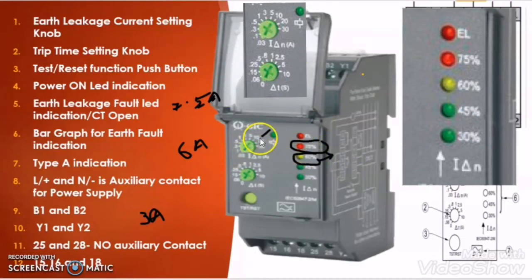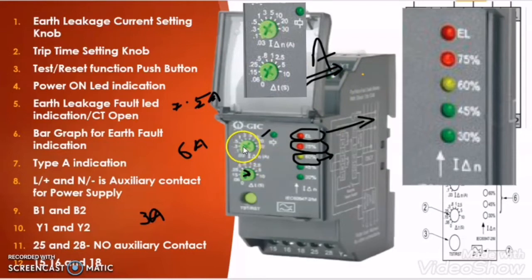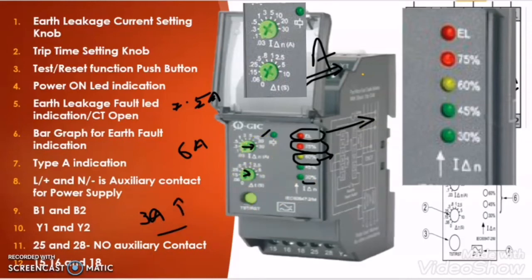If the earth leakage relay is experiencing an earth fault current of 10A, it will wait for 5 seconds if the time dial is set to 5 seconds. After 5 seconds, if the earth fault current is still 10A, the relay will trip and the trip indication bulb will glow. Note: if the dial is set at 30A instead of 10A, the 30% LED will not glow when sensing 3A — because 30% of 30A is 9A, not 3A. So the percentages are always based on the set earth leakage current value.